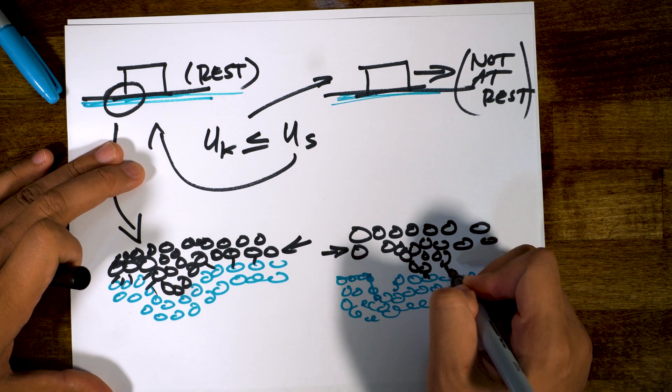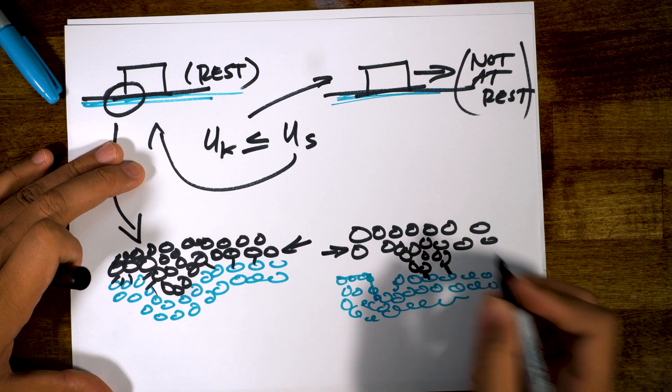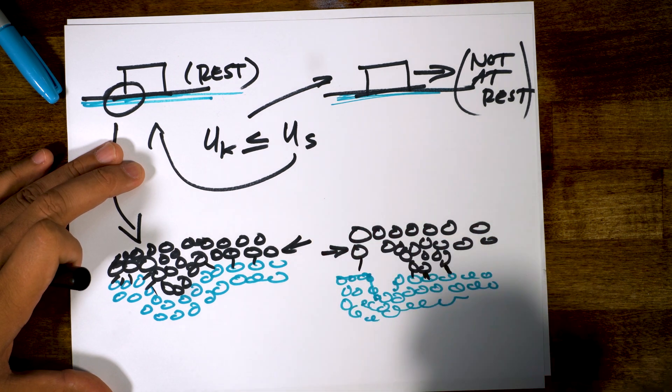Now this just requires less of a force because it doesn't have to overcome itself from getting out of this ridge. Of course you still feel the chemical bonds between the atoms of the block and the atoms of the table. Because those things are still occurring. That's part of what you feel when you're pushing something. That's friction.